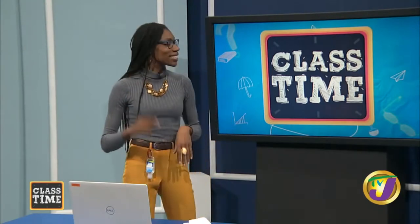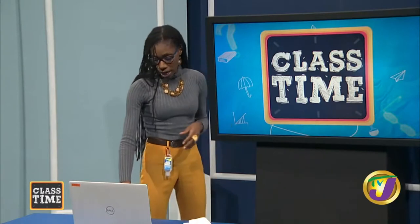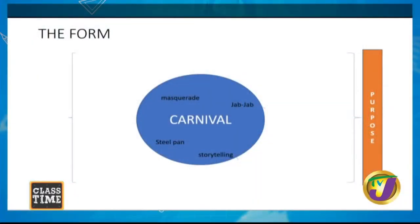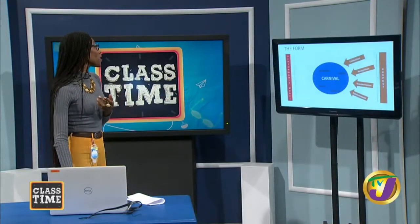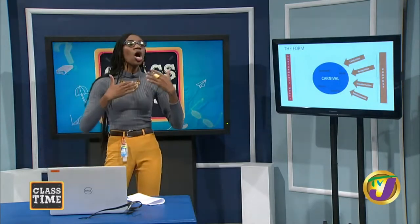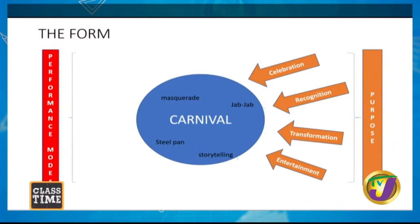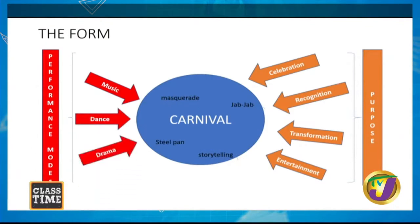Carnival is a composite art form — you can find other cultural forms embedded in it. We can find storytelling, Jab-Jab characters, steel pan, the Damlerin, the bat band — these are cultural forms in themselves that form part of the carnival celebration. The purpose of carnival ranges from celebration, recognition, transformation, and entertainment. Music, dance, and drama are performance modes found within the carnival cultural form, and these will be integral in how we create our play.